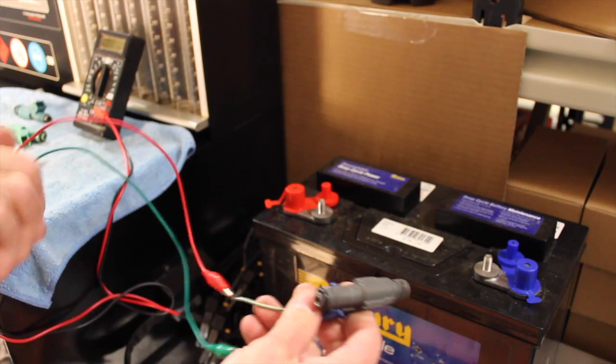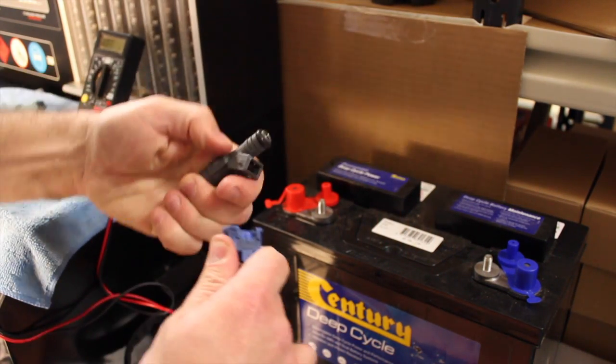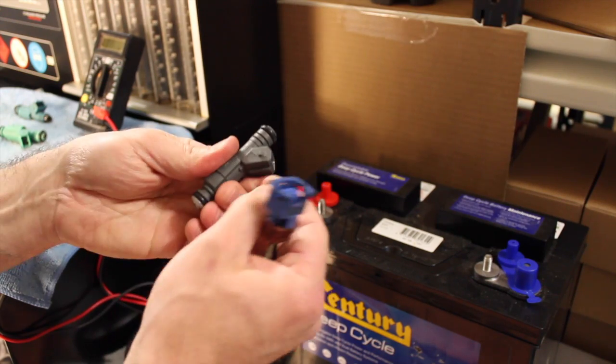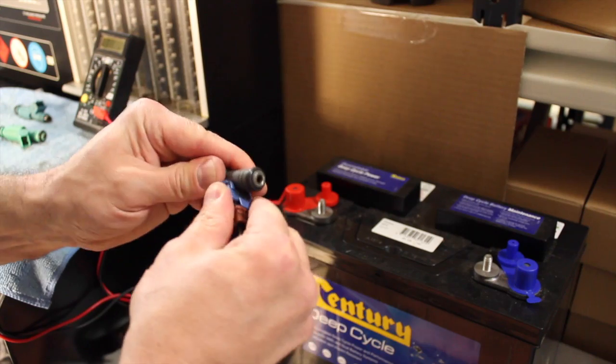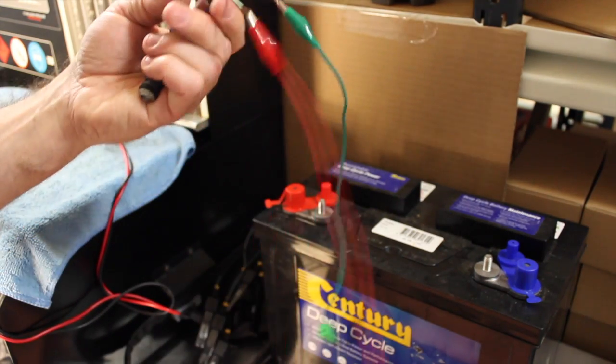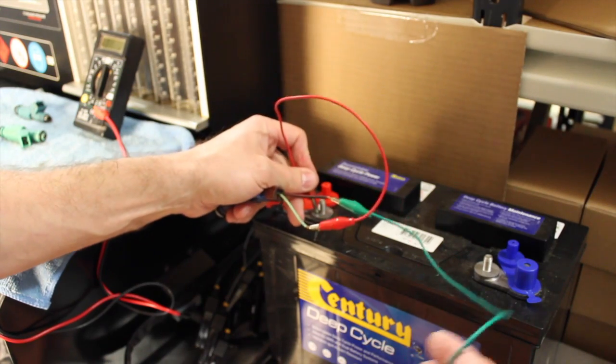What you want to do is make sure that you find the plus side on the injector, the positive, and once you do, note that down. We put this wire on, just put that on the plus and that on the negative.